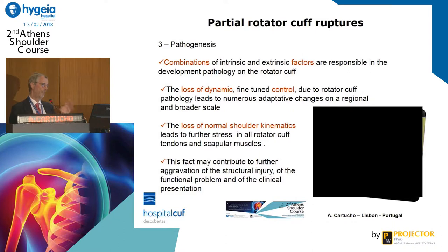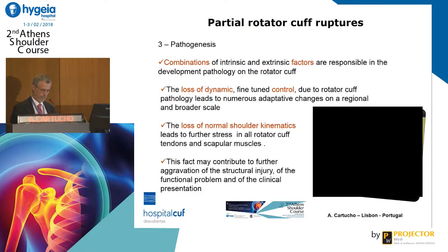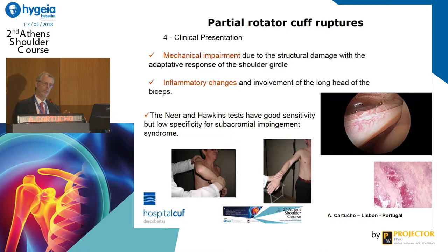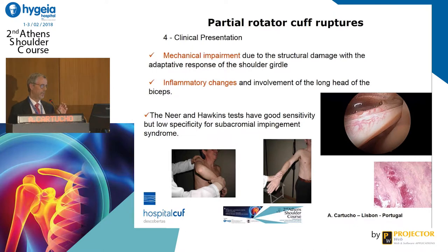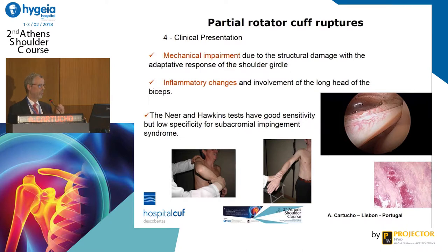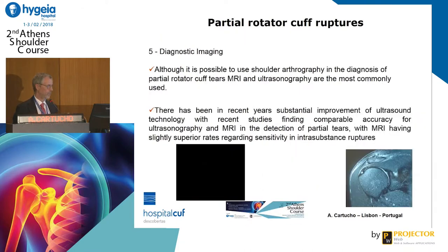If we have a traumatic incident, we'll have an impairment because of the structural lesion. But if we only have an imbalance of the shoulder, most likely we'll end up having a structural disease, as has been shown for posterior impingement. The clinical presentation is very variable. As Ladislav said, there is no correlation between the MRI findings or even the arthroscopic findings and the clinical picture of the patient. This is because most of the clinical picture is based on the inflammatory response and the quality or stability of the long head of the biceps.